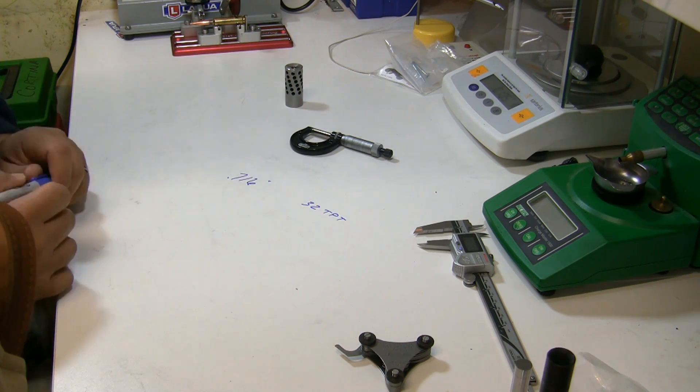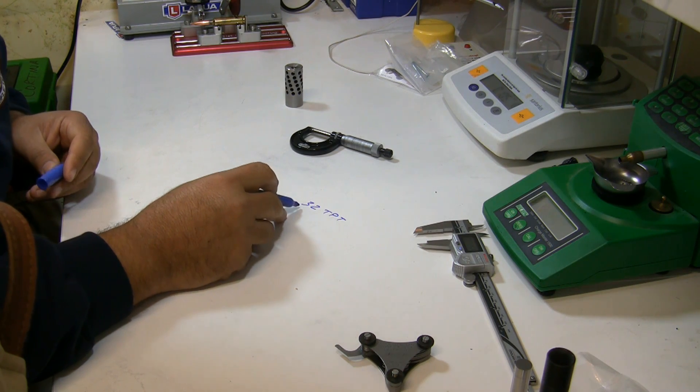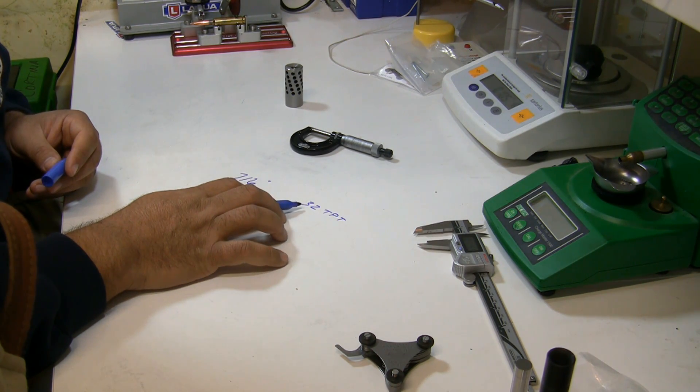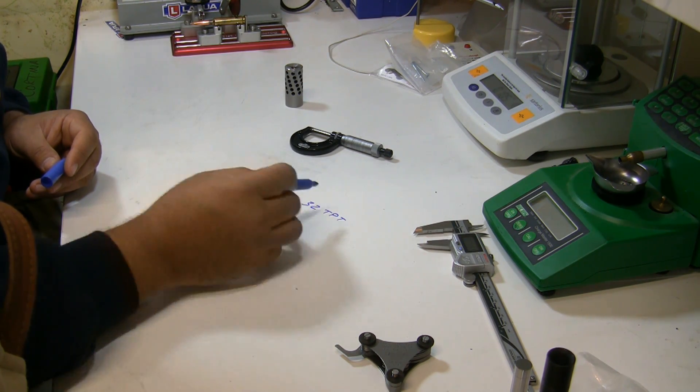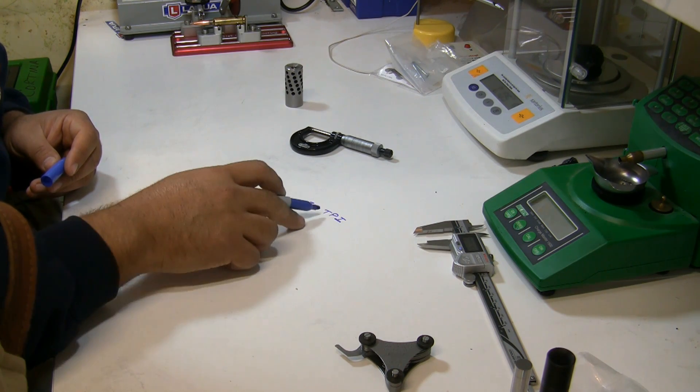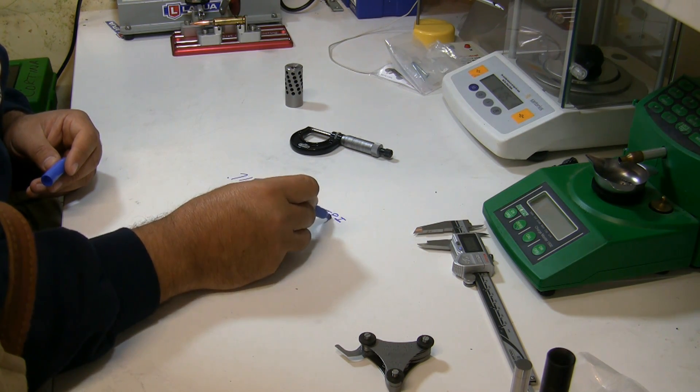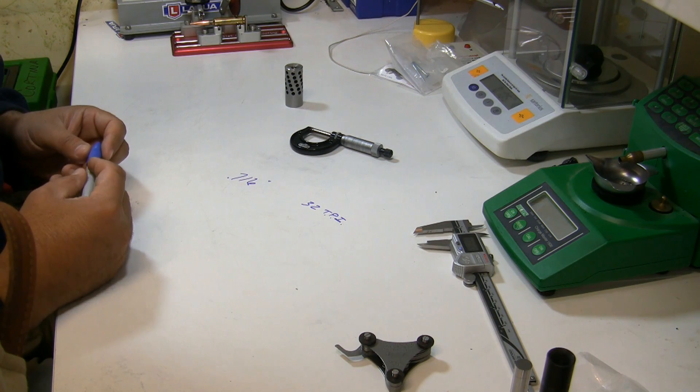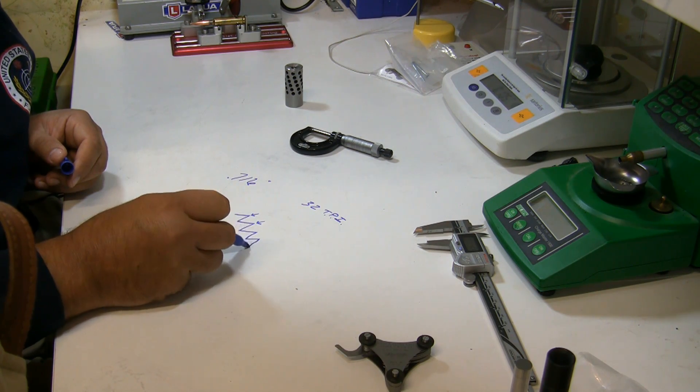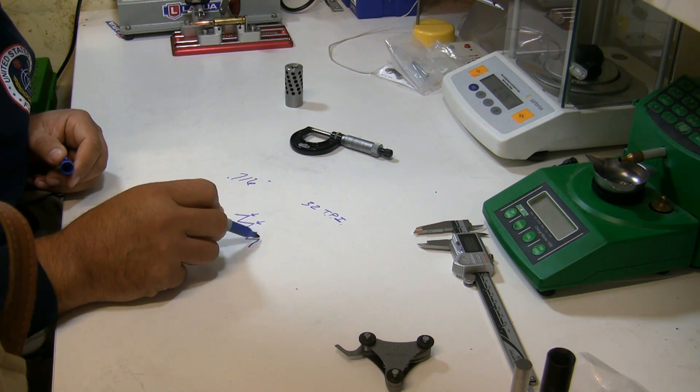Okay, what this means is for every inch there's 32 threads, hence the TPI, threads per inch. Okay, in one inch there's gonna be 32 of these.